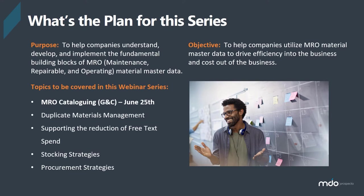Coming up later in the series, we're going to look at how you identify and manage duplicate materials, which is completely built off today's session. Then one of my arch enemies is free text spend — how do we reduce free text spend so that we create material master data that can capture controllable spend to reduce costs and stock the right parts. That'll lead into potentially looking at stocking strategies: what should I stock, what should I not, and how closely do I include maintenance and engineering teams on this journey?